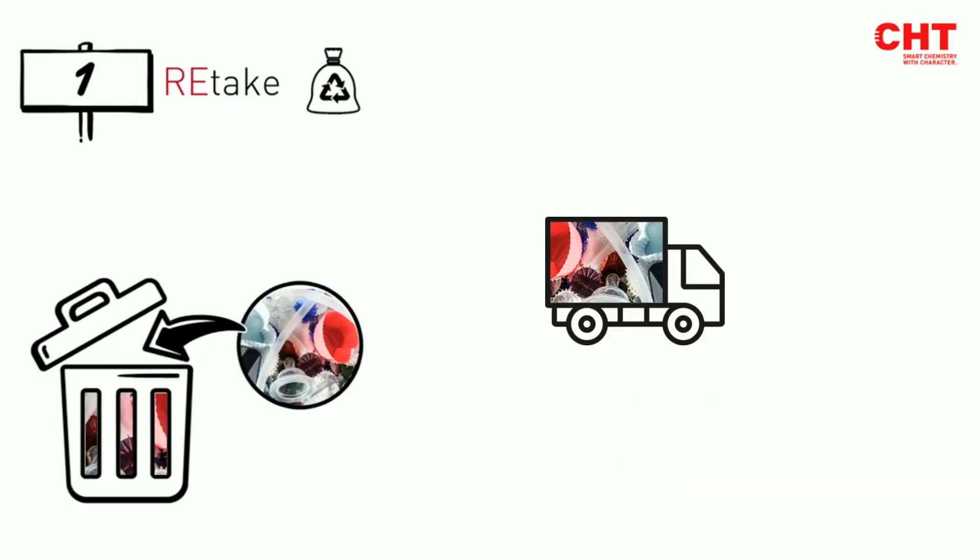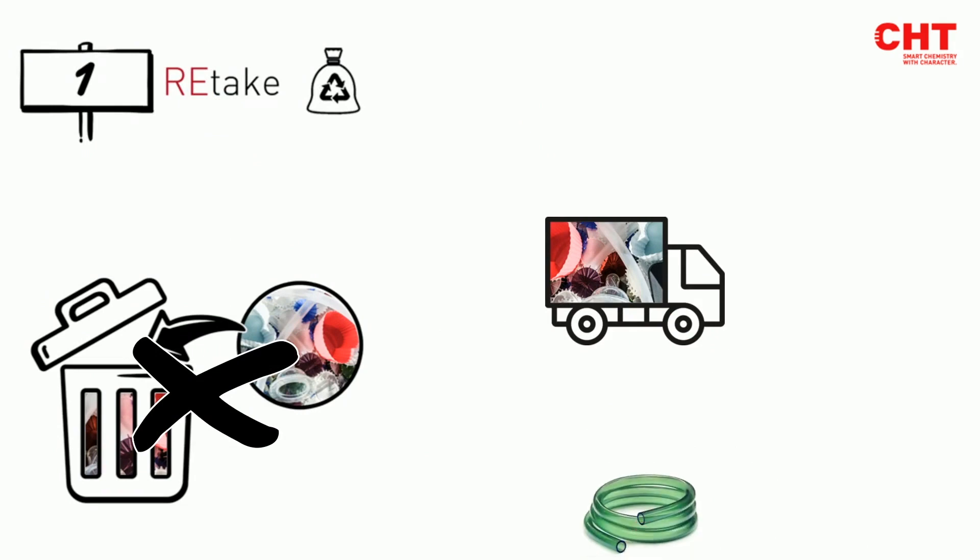In the first step, post-consumed silicons are retaken and not thrown away, as is usually the case. End-of-life silicons, such as silicon hoses and molds, as well as press remnants, are collected.